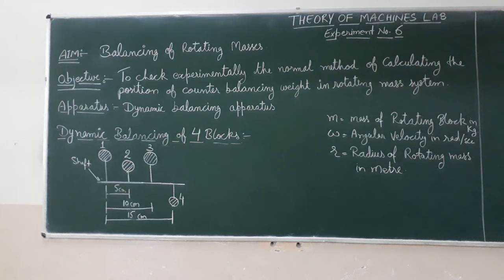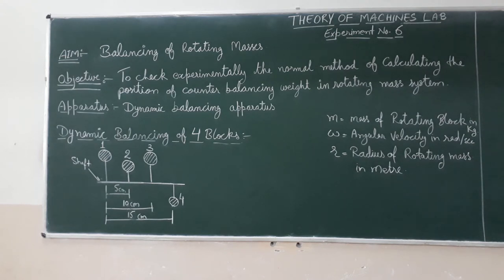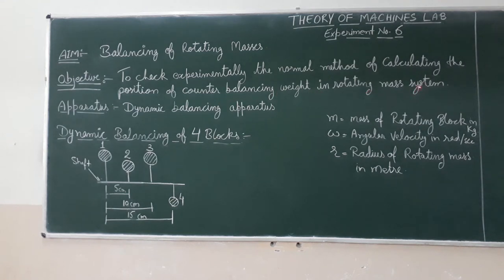Good morning dear students, this is your theory of machines lab. Today we perform experiment six: Balancing of Rotating Masses. The objective of this experiment is to experimentally verify the normal method of calculating the position of counterbalancing weights in a rotating mass system.